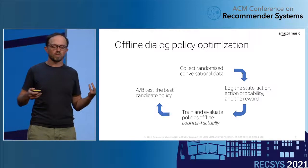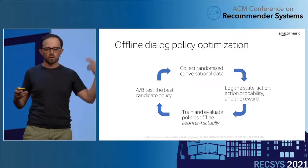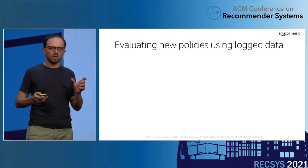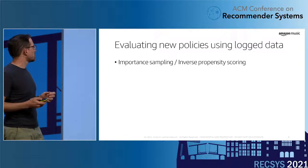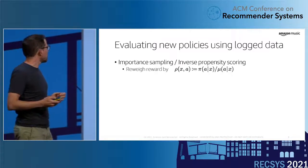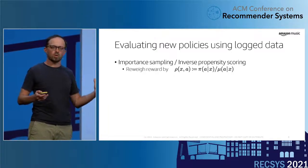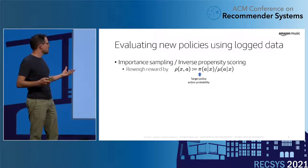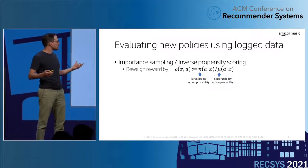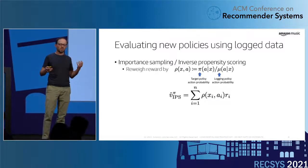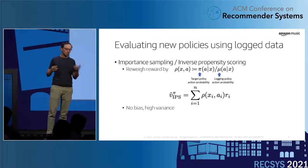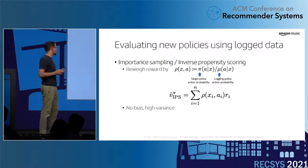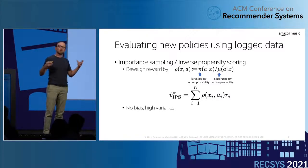If we want to improve the experience, we can add a prompt, go back to collecting more randomized data, and start again. For counterfactual evaluation, we use importance sampling, also called inverse propensity scoring. The idea is that we have logged rewards from the logging policy, and we reweight them using the probability of the action according to the target policy divided by the action probability according to the logging policy. With this reweighting, we get an unbiased estimator, though it has fairly high variance. There are all sorts of tricks to reduce that variance, and in our work we use the sequential version of this estimator.